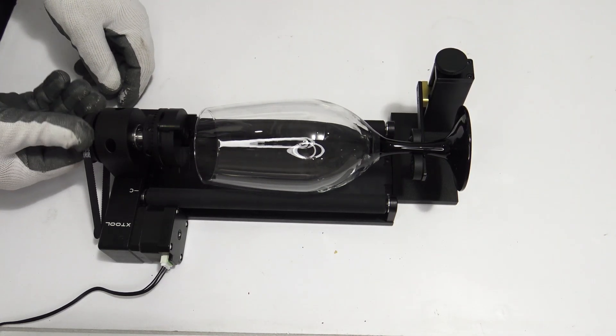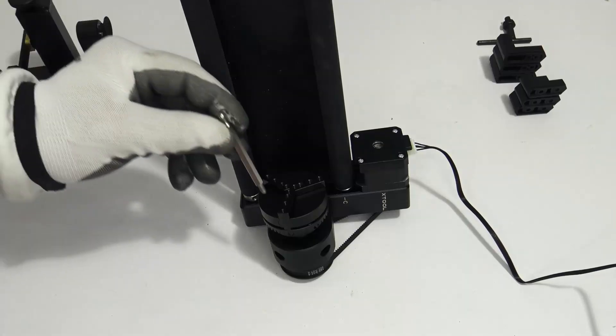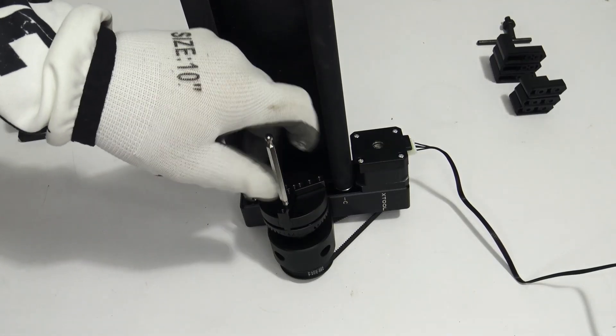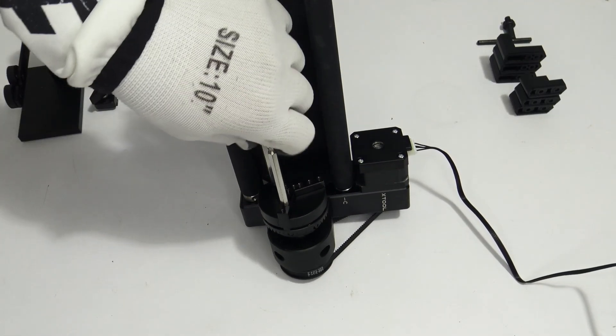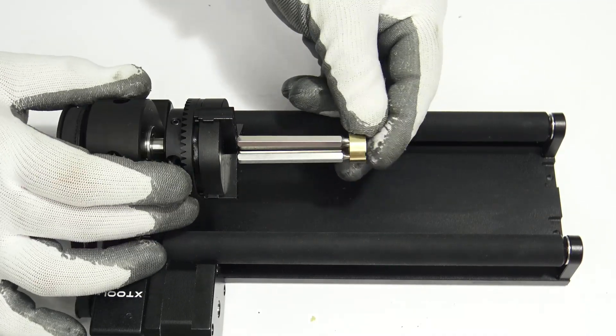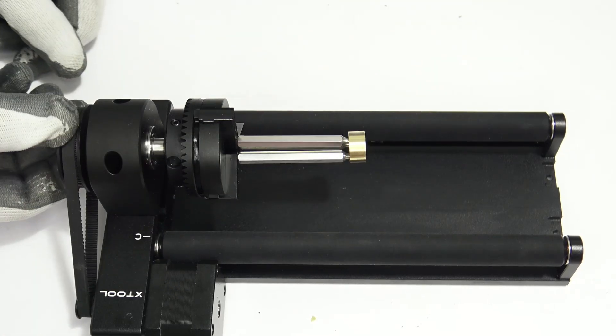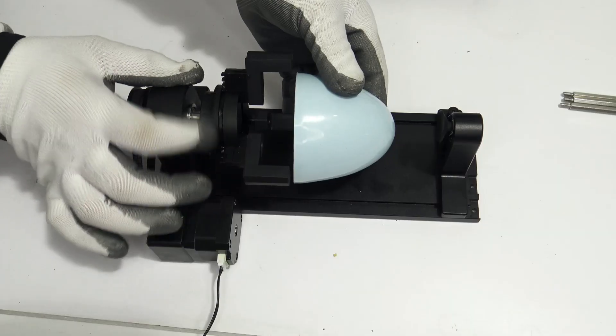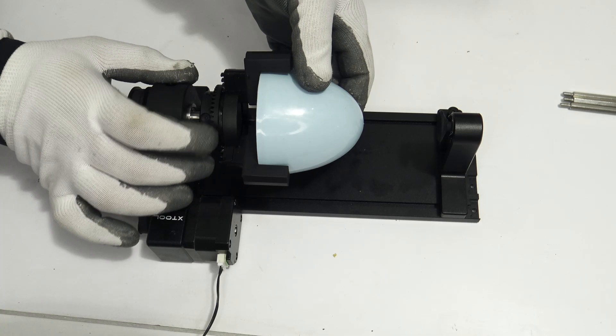If necessary, you can change the data on the clamping head. It features a chuck, like the one you find on a lathe, which provides greater precision when engraving very detailed designs on cylinder-shaped objects. It is assembled simply in a few steps.